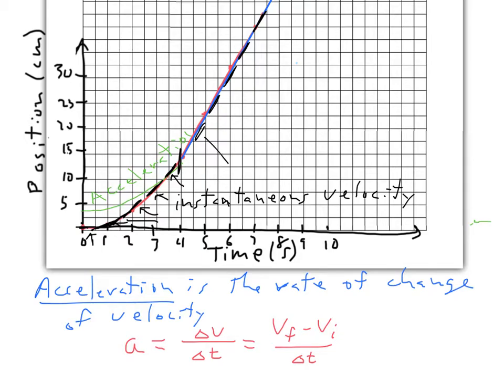Okay, so all these ones that we just drew here, all these little black, those are also instantaneous velocities. But because the velocity isn't changing, we could say that the instantaneous velocity here is the same as the instantaneous velocity up here.